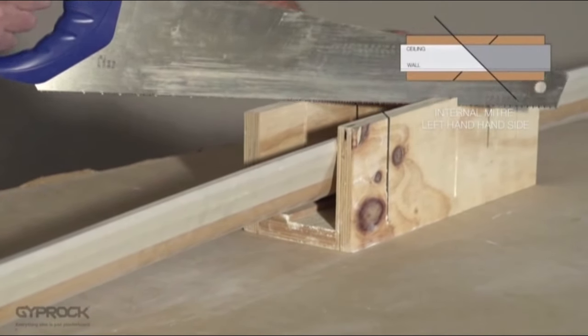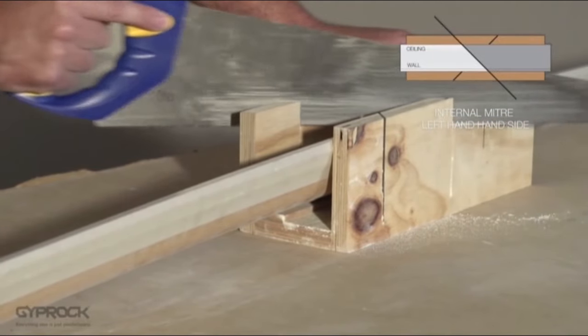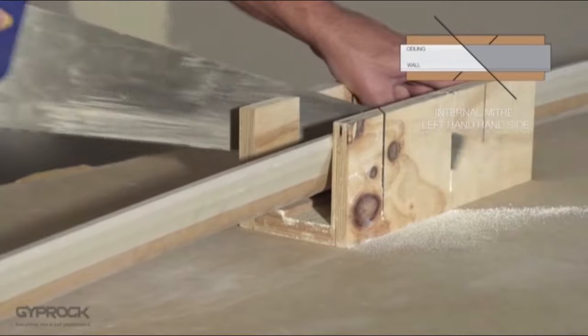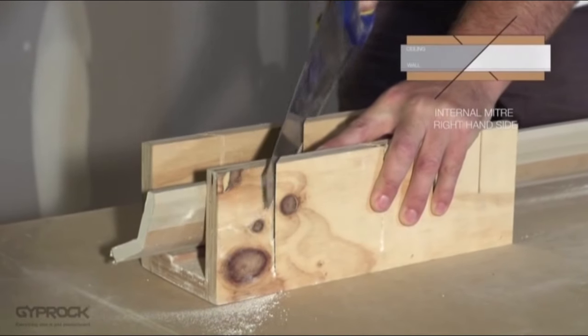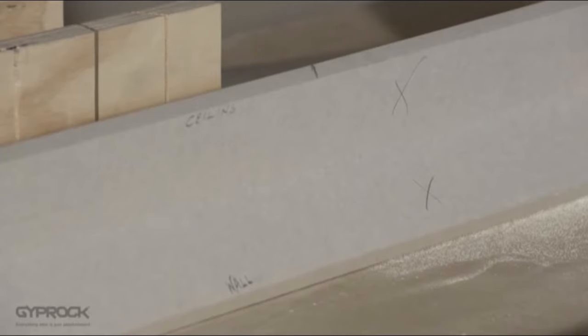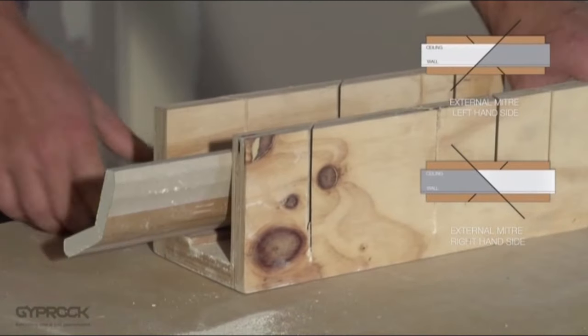Here we're cutting the left side of an internal angle mitre using Gyproc Aria a 75mm profile cornice. Simply cut the appropriate angle that results in the ceiling edge being shorter. Change the direction of your cut for the right side of an internal angle mitre. For external angle mitres the wall length is the shorter length so cut the mitre accordingly.